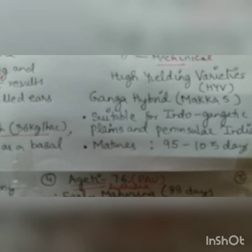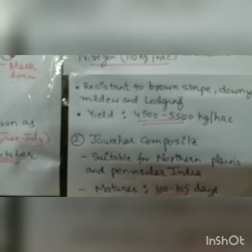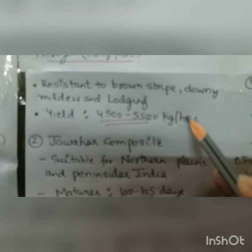Now the high yielding varieties of maize. First is Ganga Hybrid, also called Makka 5, suitable for the Indo-Gangetic plains. It matures in 90 to 105 days and is resistant to brown stripe, downy mildew, and lodging. Yield is 45 to 55 quintals per hectare.